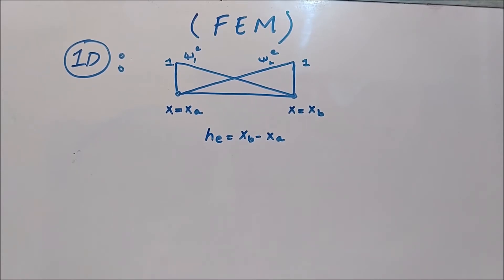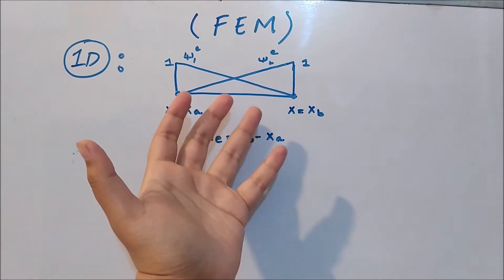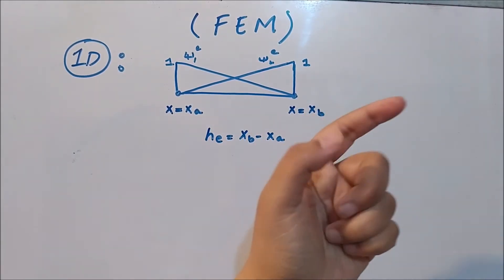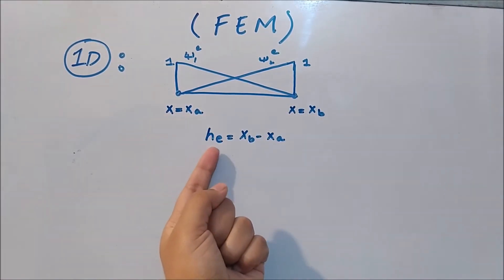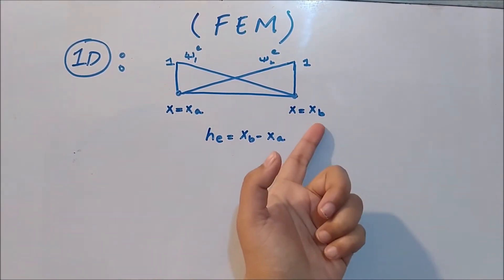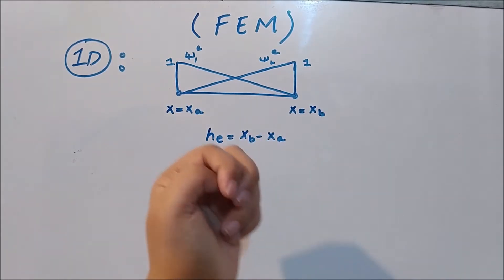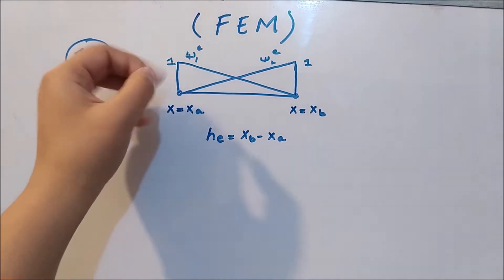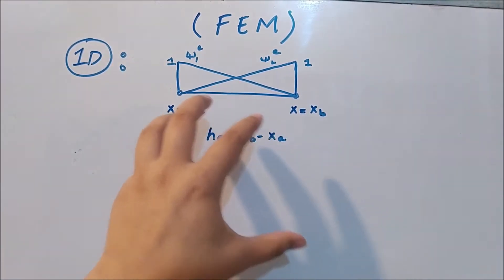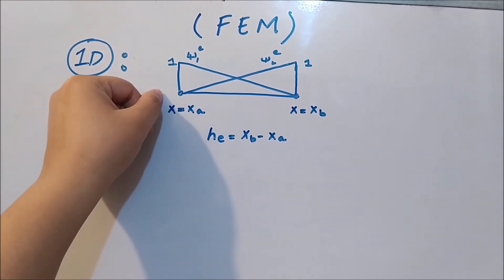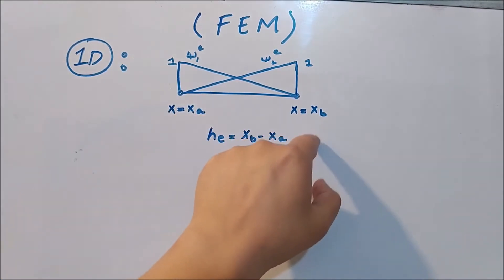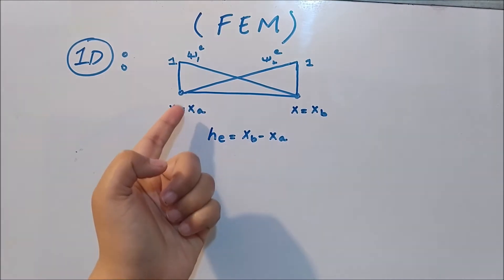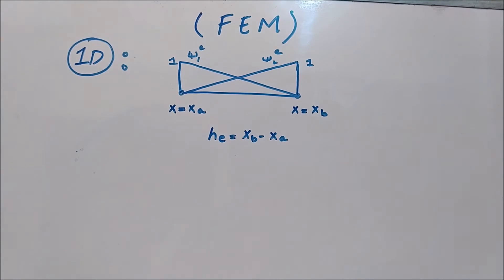The first case we discussed is the eth element — a linear element having two nodes. The first node is represented by x_a and the second node is x_b. The length of the element is x_b minus x_a. Due to the interpolating nature of the shape function, ψ₁ equals one at node x_a and zero at the other end, while ψ₂ equals one at x_b and zero at x_a.